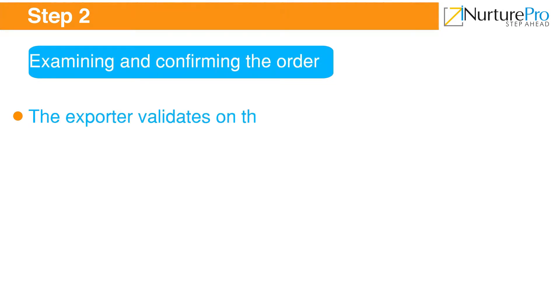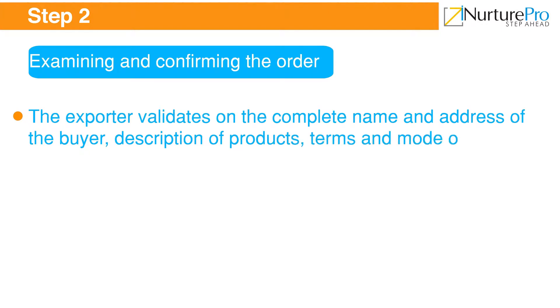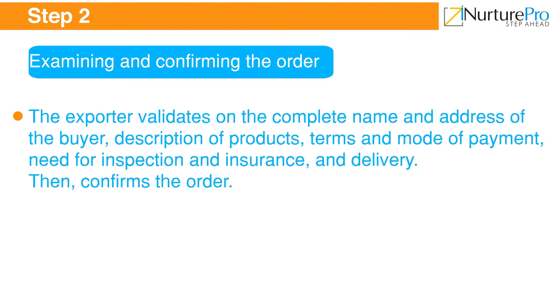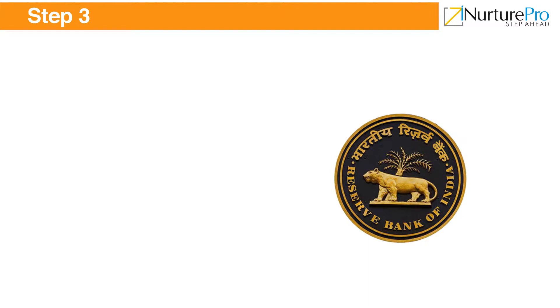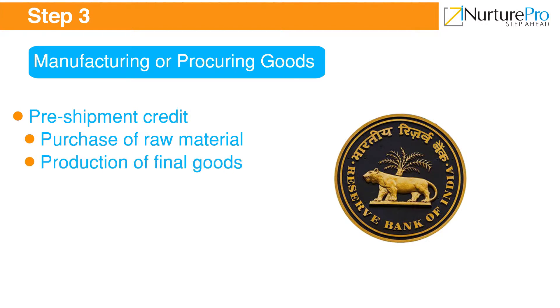In the international trade arena, export documentation and procedures are necessary to help prevent goods from being rejected, discarded, or wasted due to failure in obtaining clearance certificates from the concerned port. To export or import goods from or to India, individuals or businesses must acquire an Import Export Code (IEC) from the Directorate General of Foreign Trade. An export order is a written document in which the terms and conditions of trade are mutually decided by the importer and the exporter.